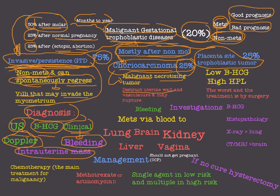Choriocarcinoma is a malignant necrotizing tumor that can destroy the uterine wall and the vasculature of the uterus, and may eventually cause rupture. That is why we have huge bleeding in choriocarcinoma — due to destruction of the uterine wall and vasculature. Investigations include beta-hCG and histopathology, which is confirmative for diagnosis.